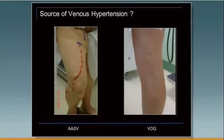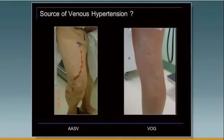Just by looking at someone clinically, the pattern of the varicosities when they cross the knee are a tip-off that it's not the great saphenous vein. You do have to map it with ultrasound to make sure, but this is a sine qua non of anterior accessory saphenous reflux when they cross the knee.